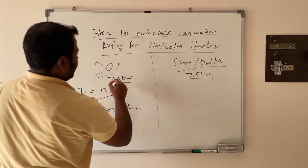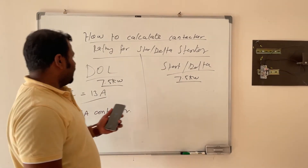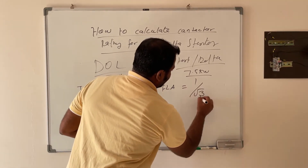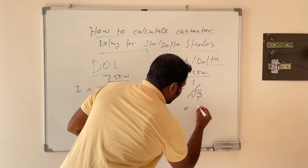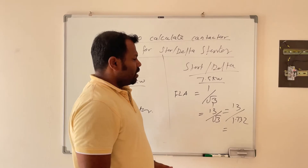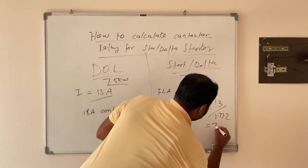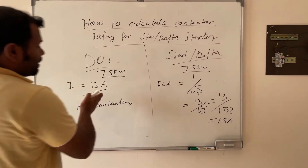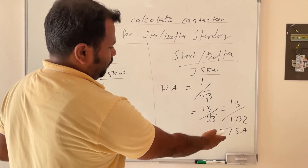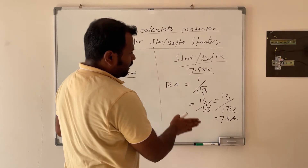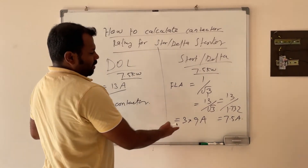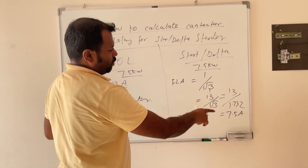Now for star-delta starter, the contactor current rating is calculated as: full load current equals one divided by root three times the full load current. That means full load current divided by 1.732. So if the full load current is 30 ampere, 30 divided by 1.732 equals 17.3 ampere — approximately 7.5 ampere for our 7.5 kW motor case. So in a star-delta starter we choose three contactors of 9 ampere each — one for main, one for star, and one for delta.